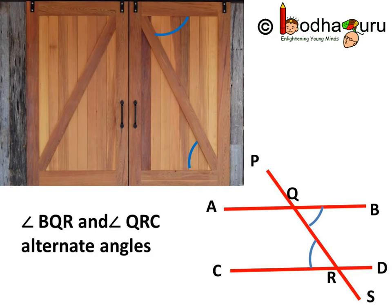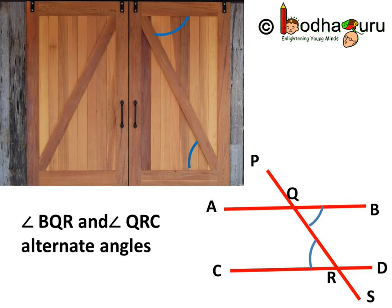This axiom can give us a relation between the alternate angles. Say transversal PS intersects two parallel lines AB and CD at points Q and R respectively. Then, angle BQR and angle QRC are alternate interior angles.